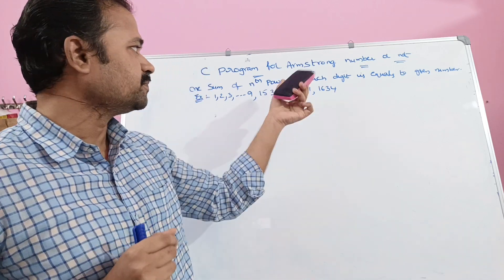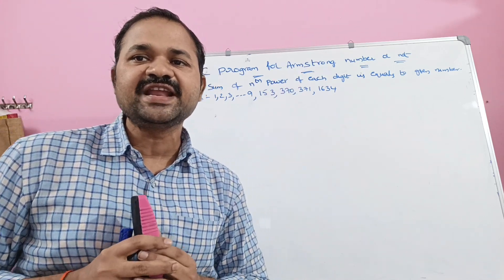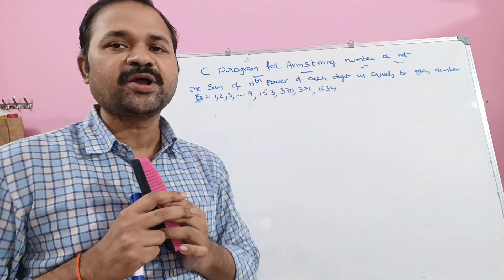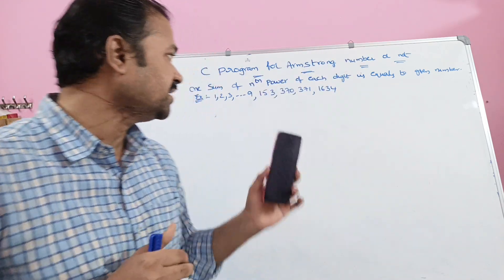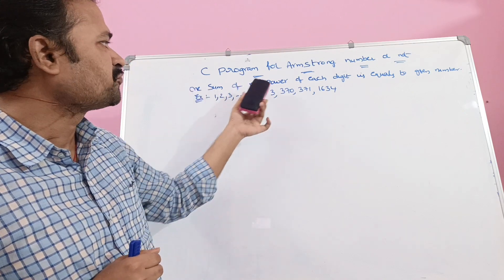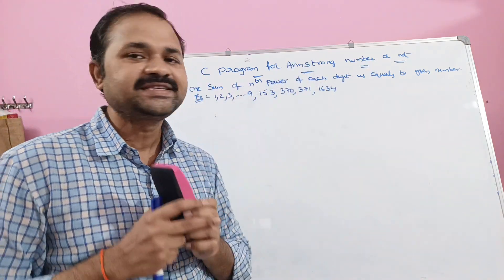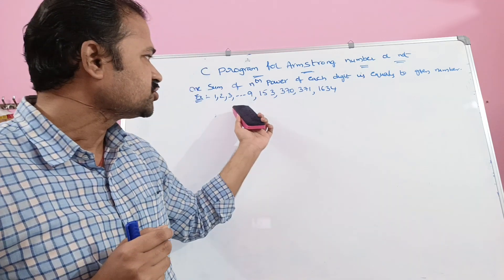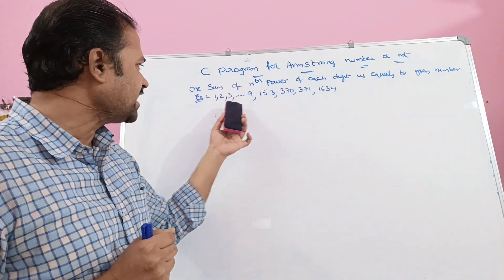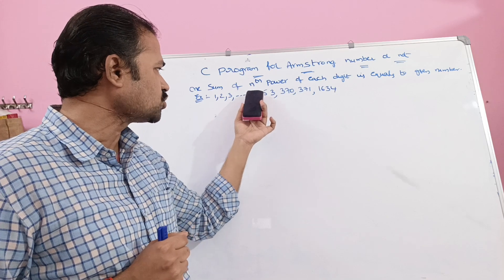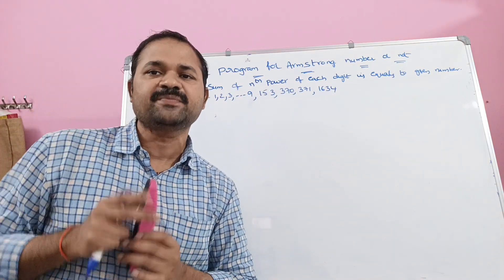Let's see this program to check whether a given number is Armstrong number or not. First, let's see what is an Armstrong number. The sum of nth power of each digit is equal to the given number. These are several examples of Armstrong numbers: 1, 2, 3, and so on up to 9. All single digit numbers are Armstrong numbers.